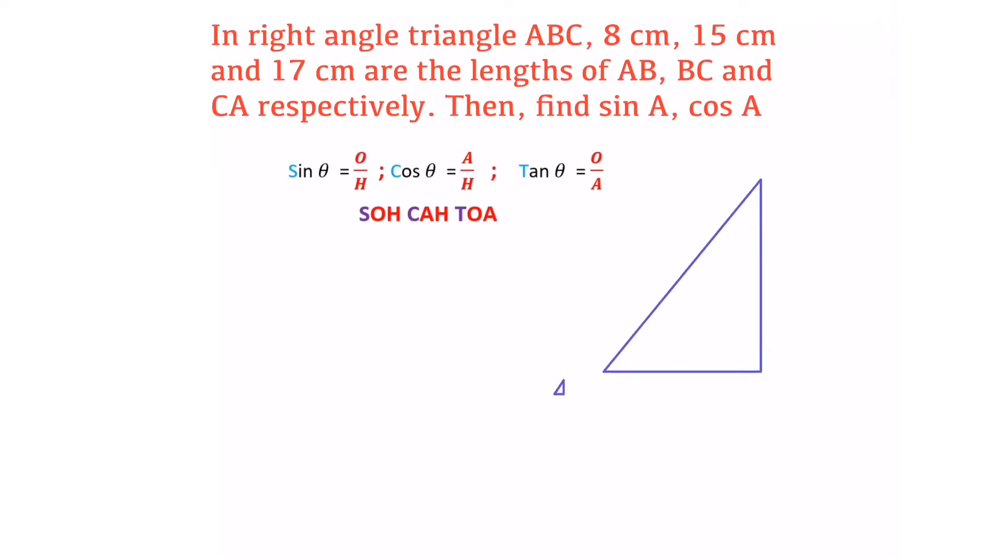We will label this as A, B, and C. AB is given as 8 centimeters, BC is given as 15 centimeters, and CA is given as 17 centimeters. The side opposite to the right angle will be the largest side.